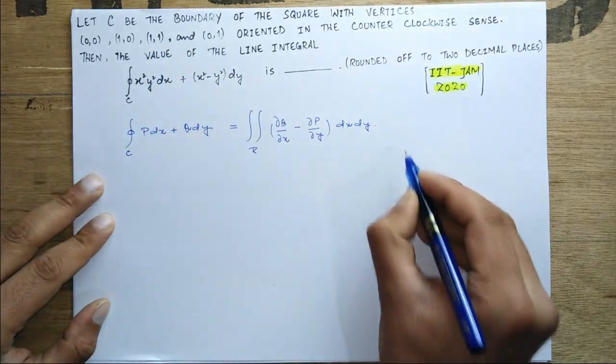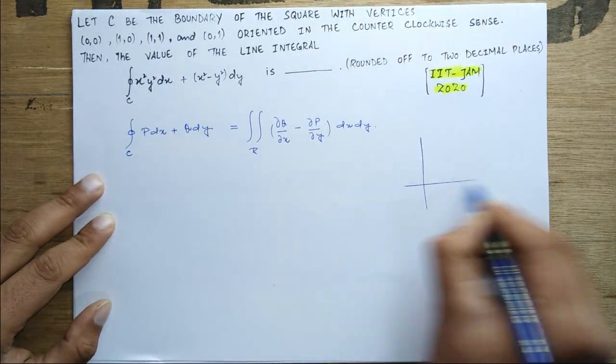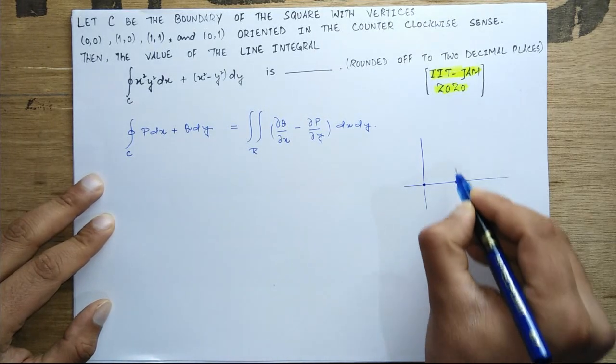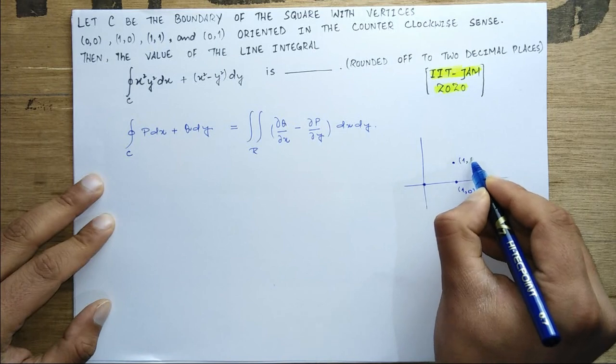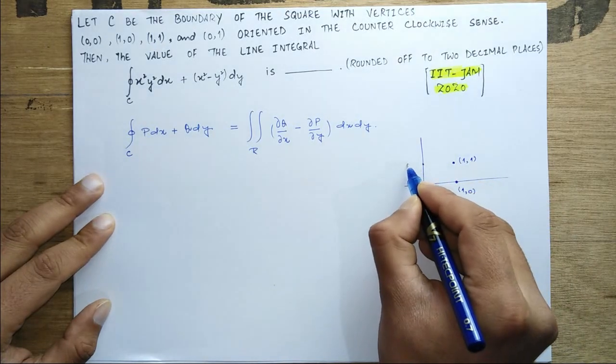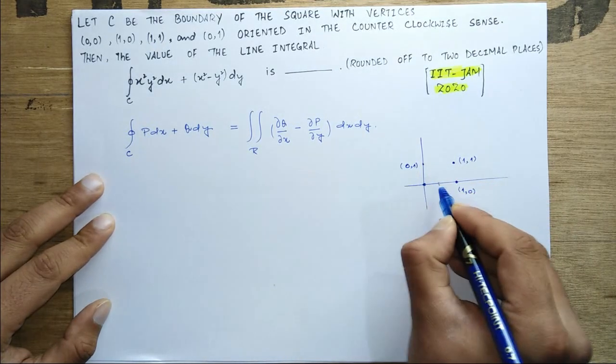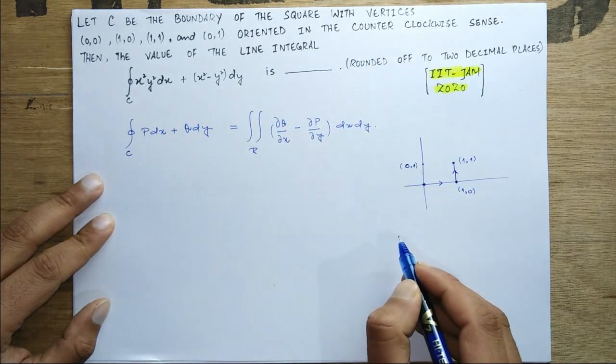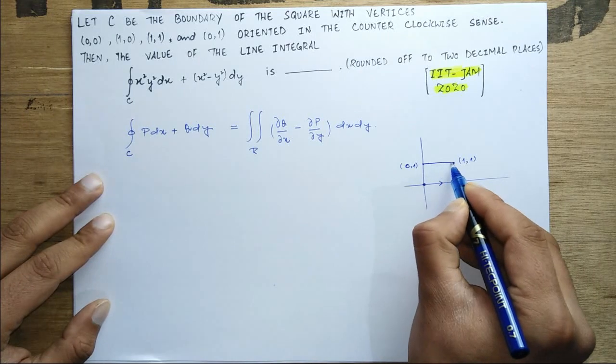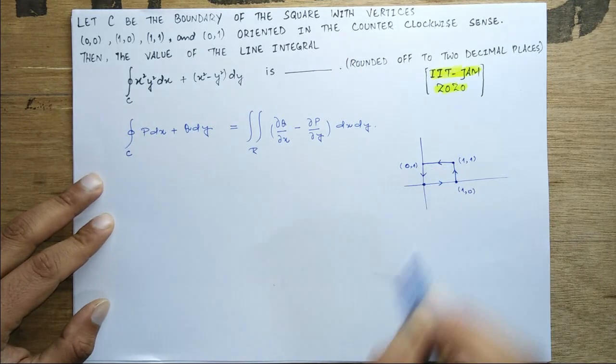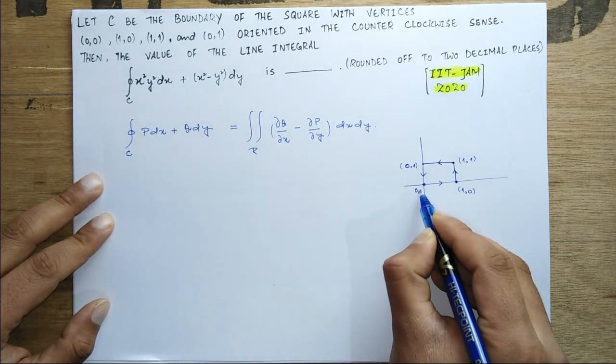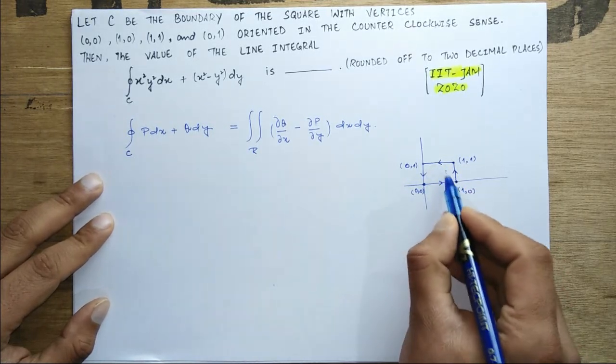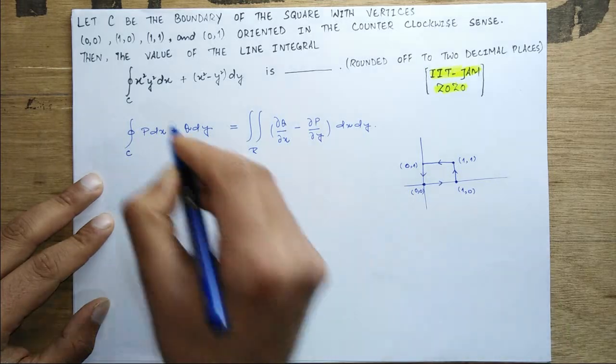If you can see here, our C is at (0,0), (1,0), then you have this point (1,1), and then you have (0,1), this point. It goes like this. As it is saying, oriented in the counterclockwise sense. This point is (0,0). Now it encloses this area, so our region is this square.